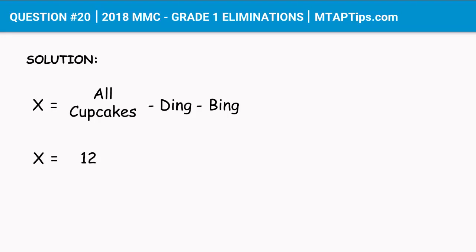So we'll have X is equal to 12, which is the total number of cupcakes, minus 2, which is the number of cupcakes that Ding got, minus the number of cupcakes that Bing got, which is one-fourth of a dozen — which we'll have to convert into a whole number.